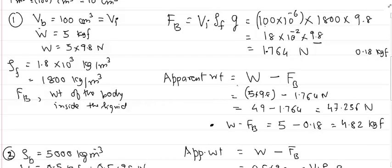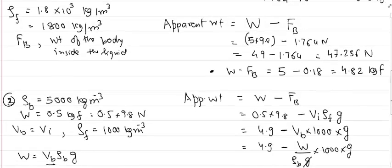Next is apparent weight. Apparent weight equals weight of the body minus upthrust. Weight of the body is 5 kgf = 5 × 9.8 Newton. Minus upthrust 1.764 Newton gives 47.236 Newton. If you want this in kgf, divide by 9.8 to get 4.82 kgf.